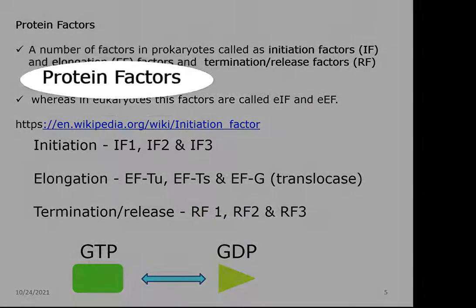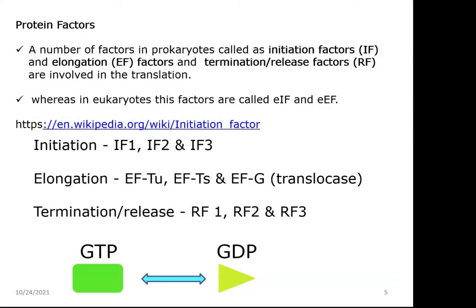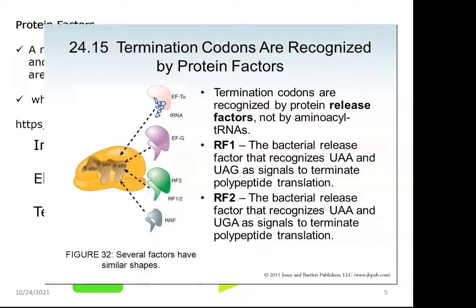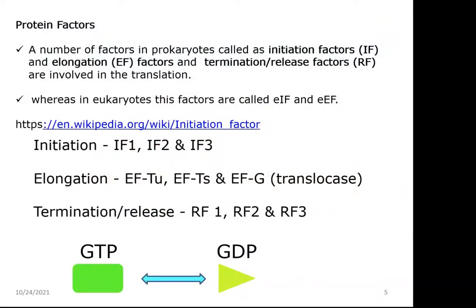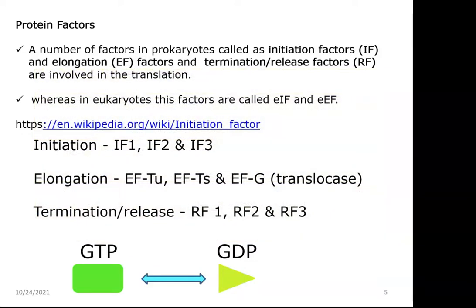Next, we look at protein factors, which are essential for proper translation. Many protein factors are available in prokaryotes, commonly referred to as IF (initiation factors), EF (elongation factors), and RF (release/termination factors). Some special protein factors are involved in each of the steps. In eukaryotes, these are referred to as eIF (eukaryotic initiation factors) and eEF (eukaryotic elongation factors), where 'E' refers to eukaryotes.